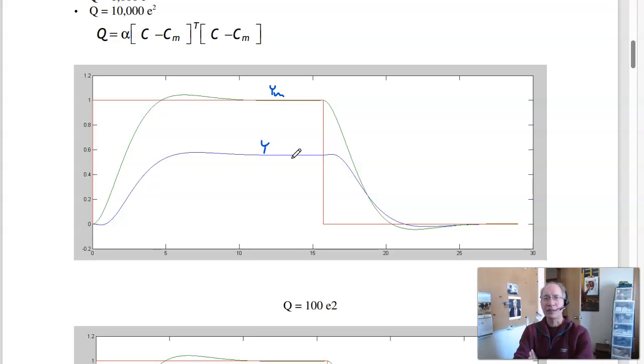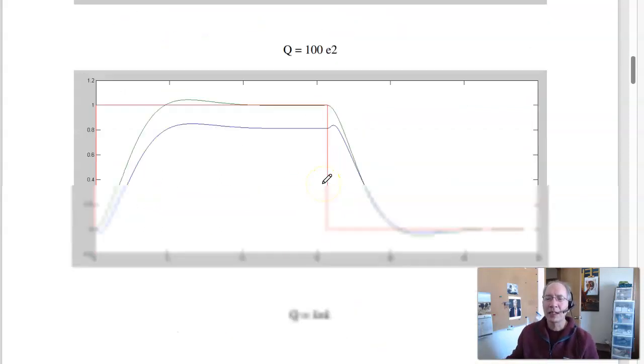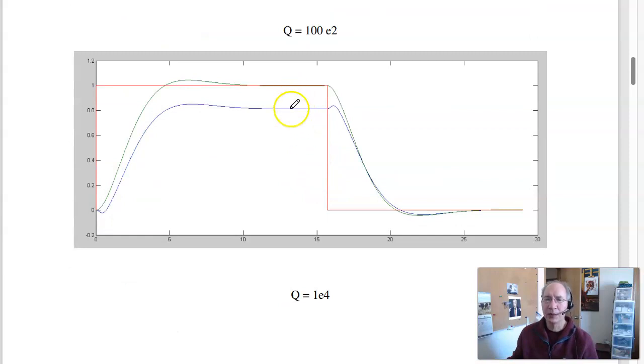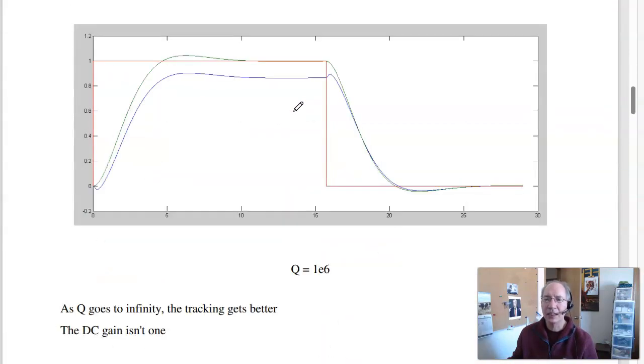The trade-off is the cost function: 100 E squared plus U squared. If I increase the weighting to 10 to the 4th, I get better tracking. And 10 to the 6th, again, still steady state error. DC gain is at 1. I can adjust the DC gain just by throwing in R times a constant. That's generally how it behaves. And it won't be exact.